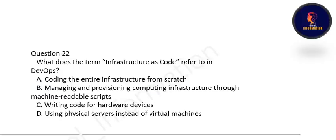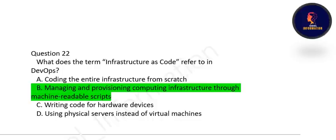Next question: what does the term 'Infrastructure as Code' refer to in DevOps? Infrastructure as Code refers to managing and provisioning computing infrastructure through machine-readable scripts. Option B is correct.